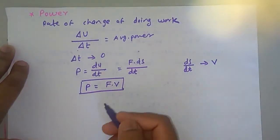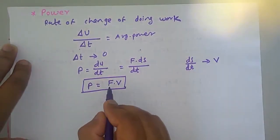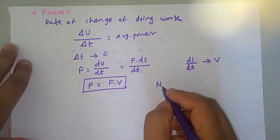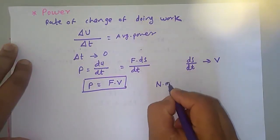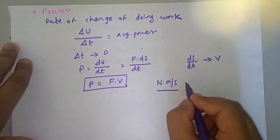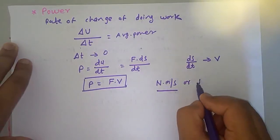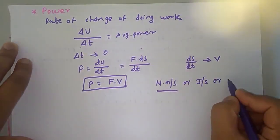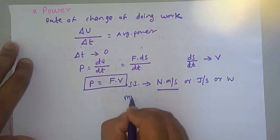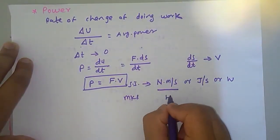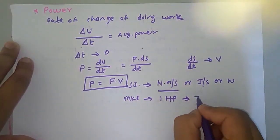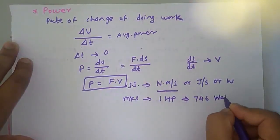The unit of power is the product of force and velocity: Newton times meter per second, which equals Joule per second, also written as Watt — the SI unit of power. The MKS unit of power is horsepower (HP), where 1 HP equals 746 Watt.